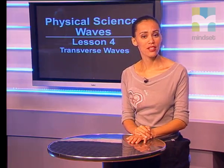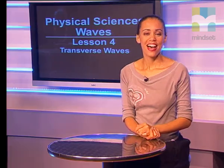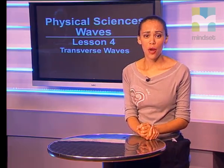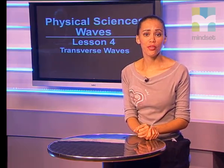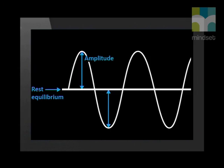Let's look at some important characteristics of the transverse wave. Firstly, the line indicates the rest or equilibrium position. This equilibrium position represents the place where the spring would be flat before it is disturbed. The maximum displacement from rest to the top and the bottom is called the amplitude. The amplitude tells me how far the wave moves from the top to the bottom.